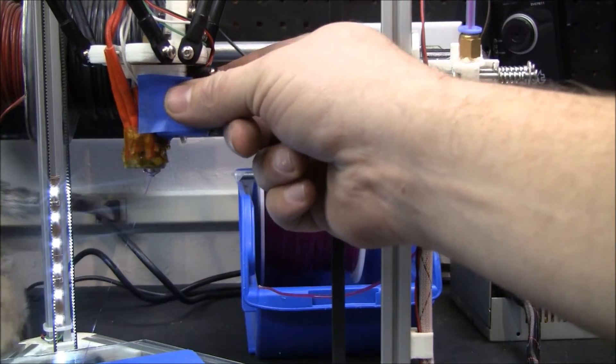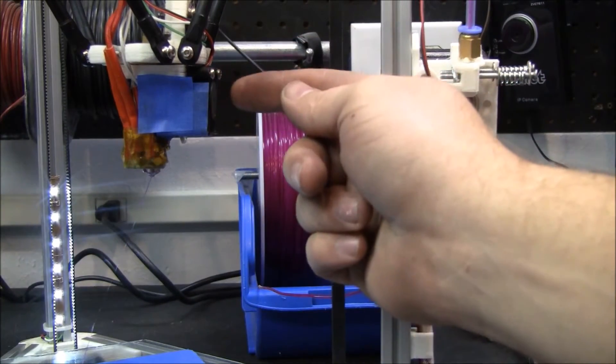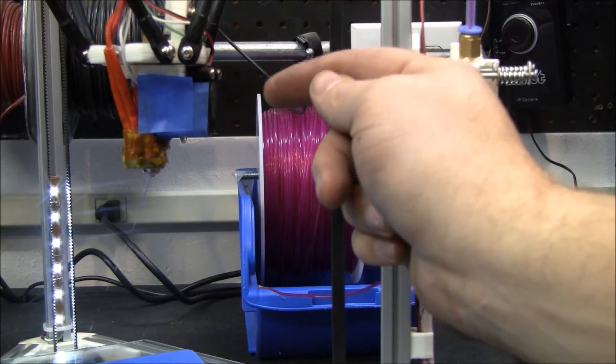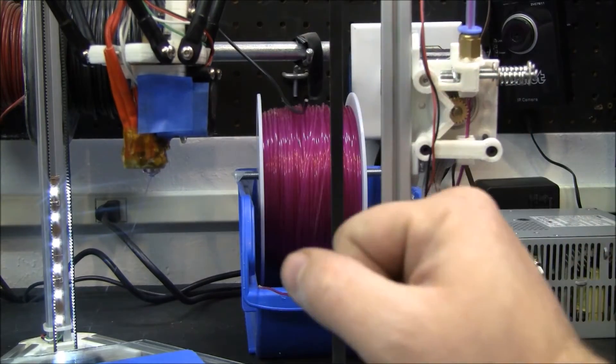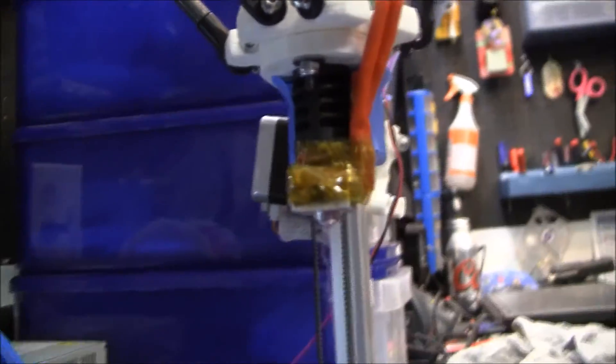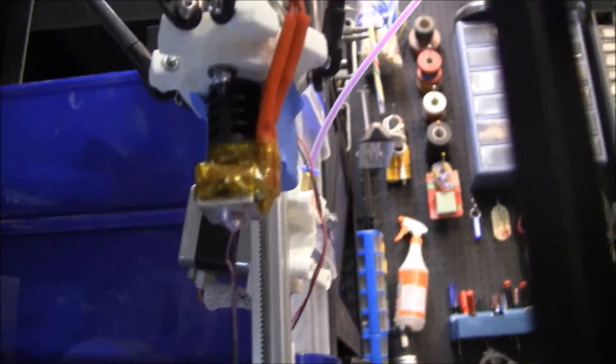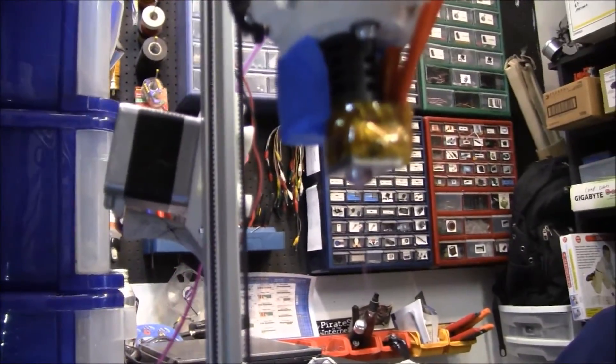One of the ways to help prevent an extruder jam is to put a cooling fan. In this case, the cooling fan does absolutely no good. So the hot end is a J-head. This is a very professional looking one. It's got a cartridge type heater in it. Looks very nice.